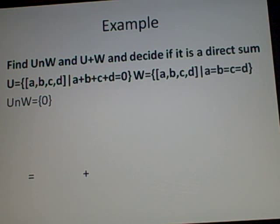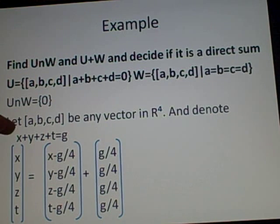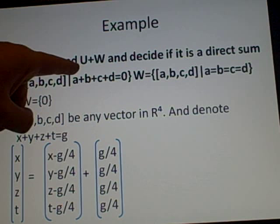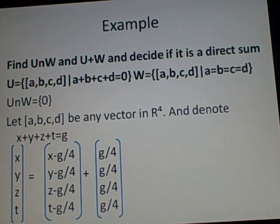Next up, we check if U+W = R⁴. Let [x,y,z,t] be any vector in R⁴. We need to show we can write it as a sum from U and W. We use a little trick where we let g = x+y+z+t.